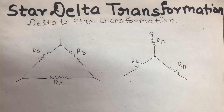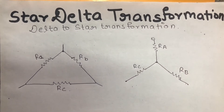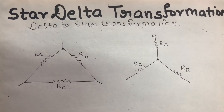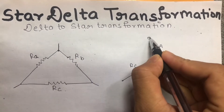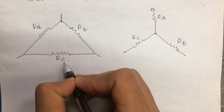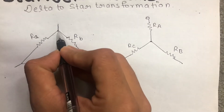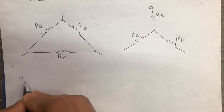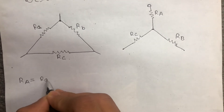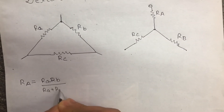I have to say a formula. This corner is similar to this corner — I have to say that this is a direct formula. The formula for RA: the formula key is RA equal to Ra times Rb upon Ra plus Rb plus Rc.